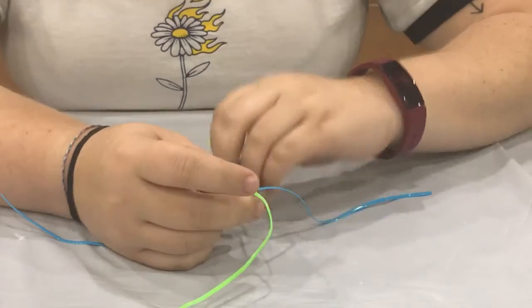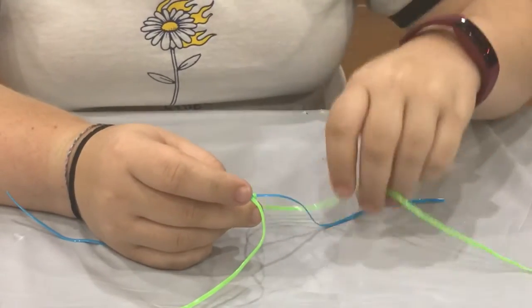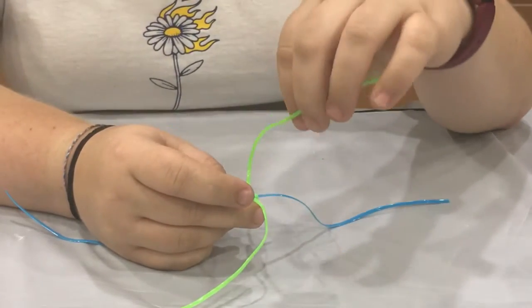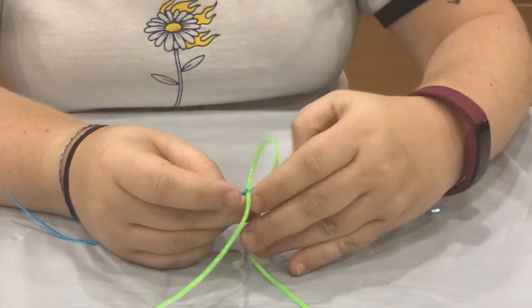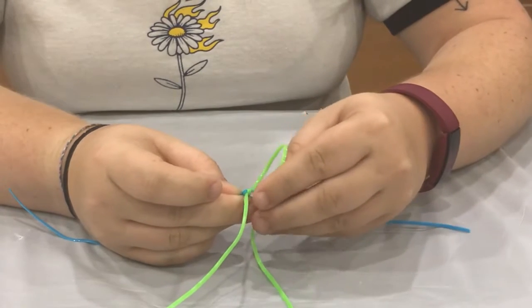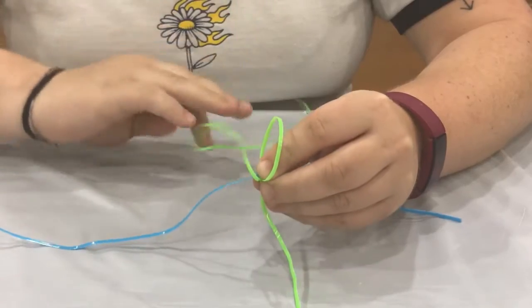So basically what you're going to do is you're going to do what you did for the first step. You're going to take the bottom piece and loop it over the left side. And you're going to take the left, I mean the top piece, and loop it over the right side.